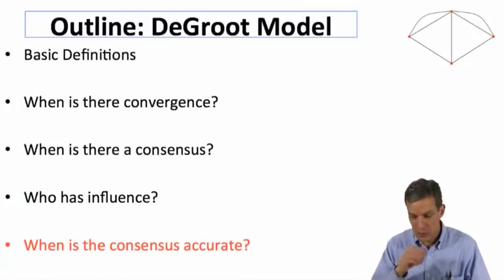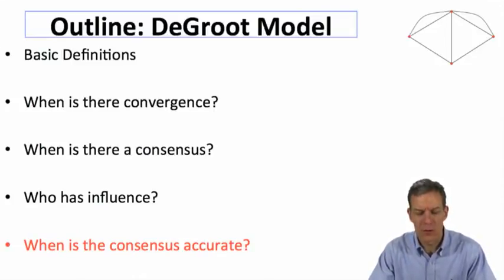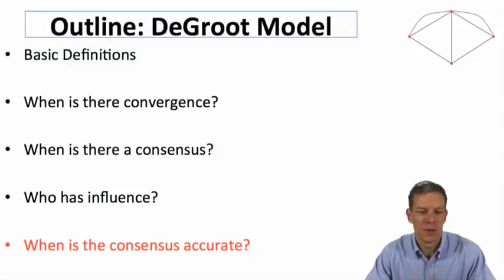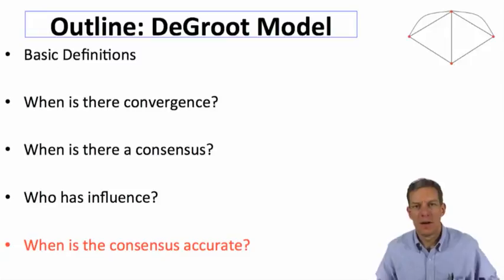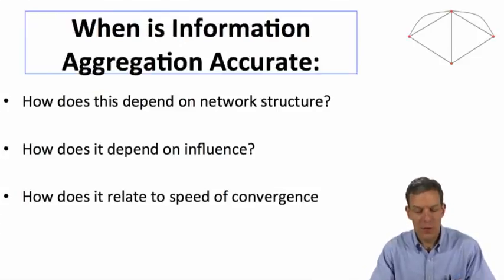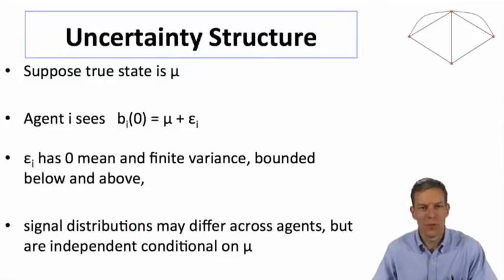We're going to have to put some structure on this. Actually, the reason I originally became interested in the DeGroot model was out of conversations with a former student of mine, Ben Golub. We started asking when people's beliefs would actually converge to the right sort of thing, even if they were acting in a fairly simple form. How does this depend on network structure? How does it depend on the influence? How does it relate to speed of convergence?